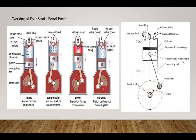Now we see the working of a four-stroke petrol engine. In the figure, you can see the four strokes: intake stroke, compression stroke, power stroke, and exhaust stroke, with complete constructional details of the petrol engine. This is the spark ignition engine, also called an SI engine or petrol engine. The working fluid is petrol or gas. Four strokes are completed in two revolutions of the crankshaft. The compression ratio of this petrol engine is 5 to 10.